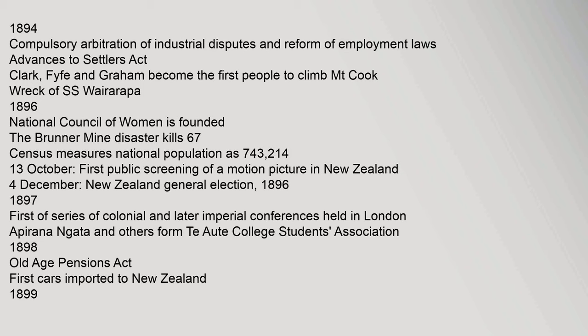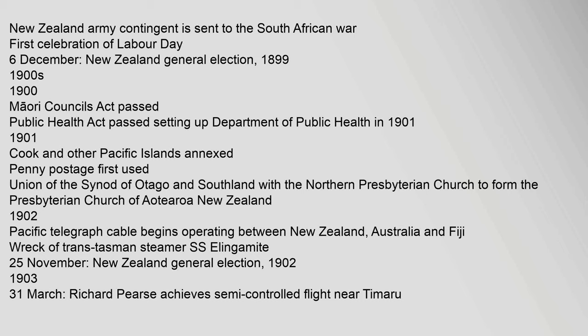4 December: New Zealand general election, 1896. 1897: First of a series of colonial and later imperial conferences held in London. Apirana Ngata and others form Te Aute College Students Association. 1898: Old Age Pensions Act. First cars imported to New Zealand. 1899: New Zealand Army contingent sent to the South African War. First celebration of Labour Day. 6 December: New Zealand general election.